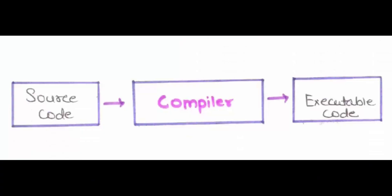Let's first start with compiled languages. The tool used to compile your language is called a compiler — no surprise there. A compiler takes all your source code, translates it to machine language, which is just ones and zeros or binary, and the output is going to be an executable that's ready to be run on your machine.